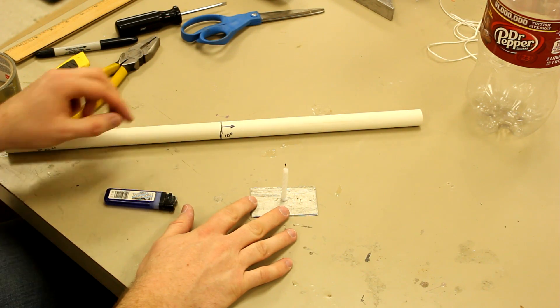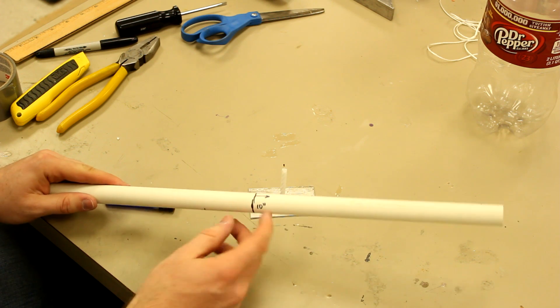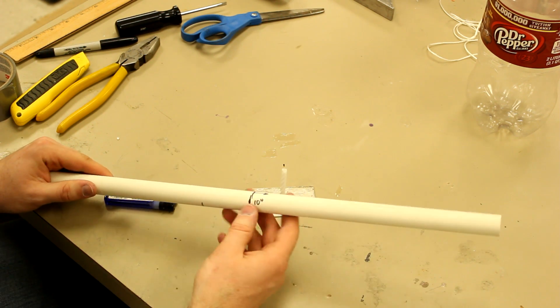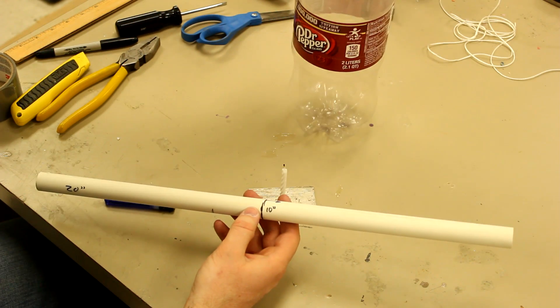Alright, the next thing we want to do is put a slight bulge in our long piece of PVC. This will be what the water bottle seals against when you go to launch it.